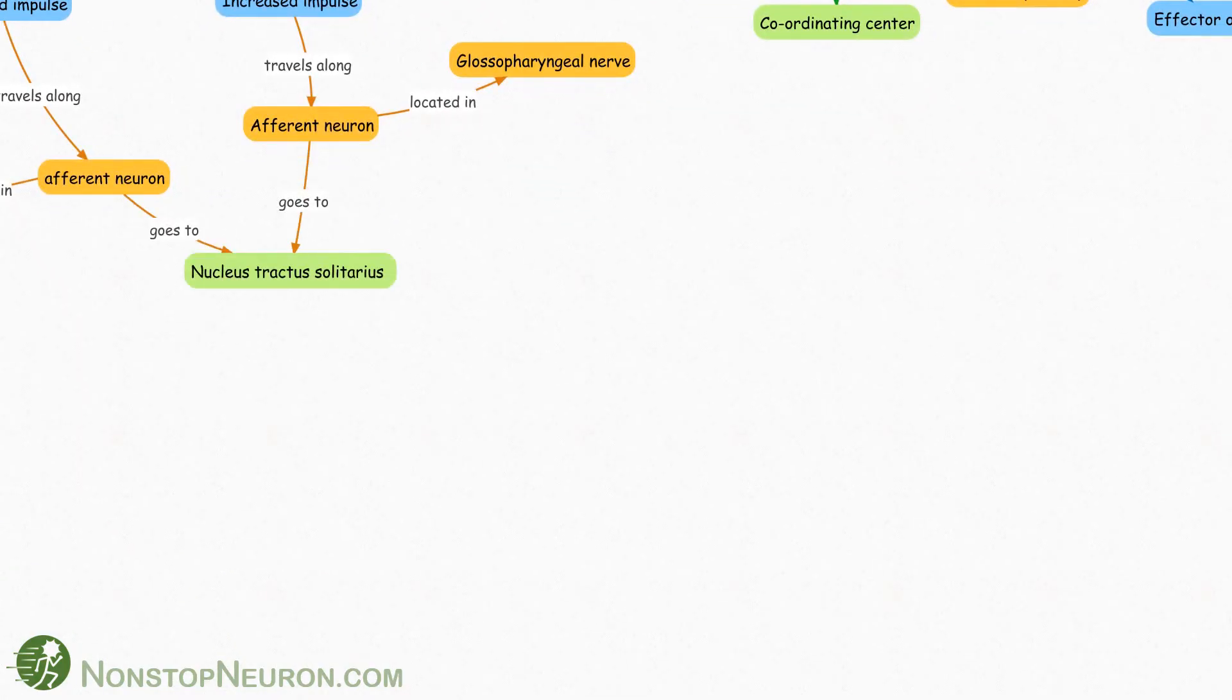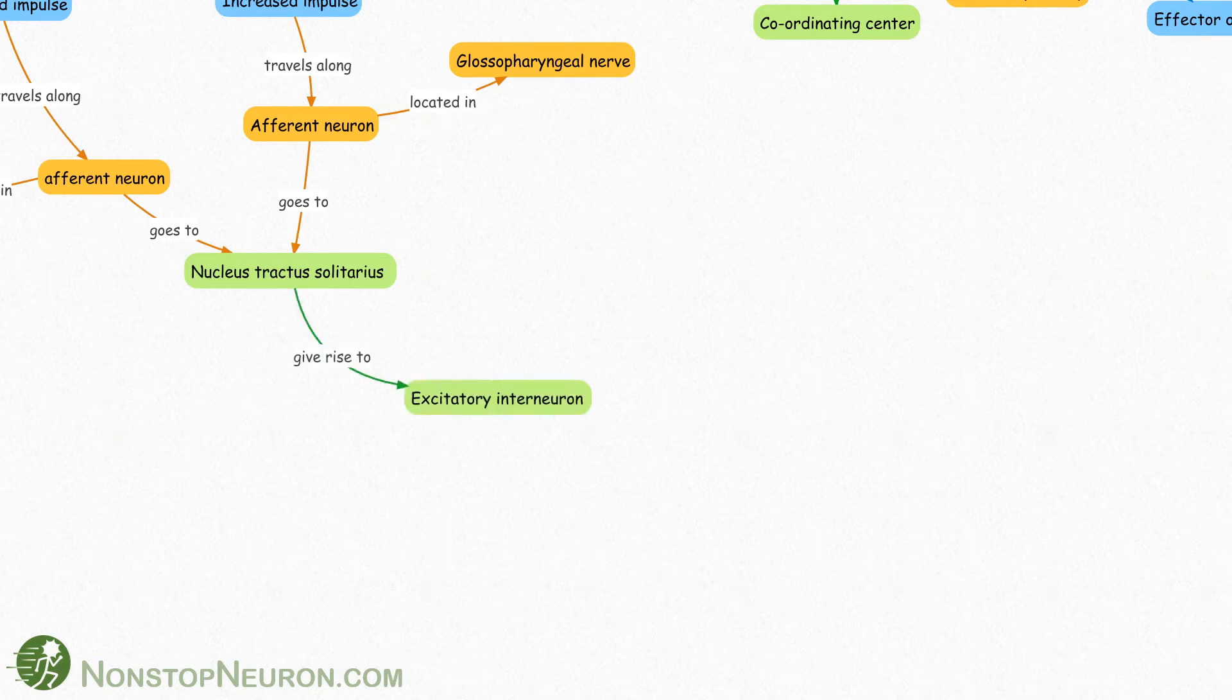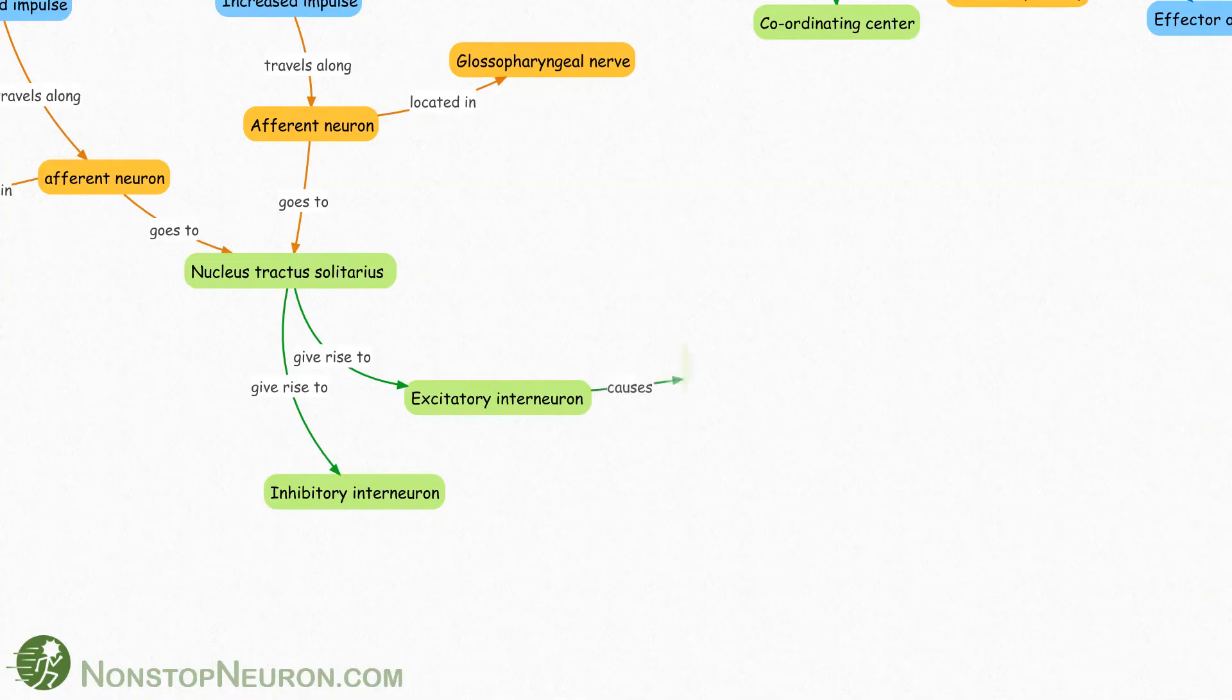These neurons go to nucleus tractus solitarius in medulla. This nucleus gives rise to excitatory interneurons and inhibitory interneurons. Excitatory interneurons cause stimulation of cardioinhibitory area.